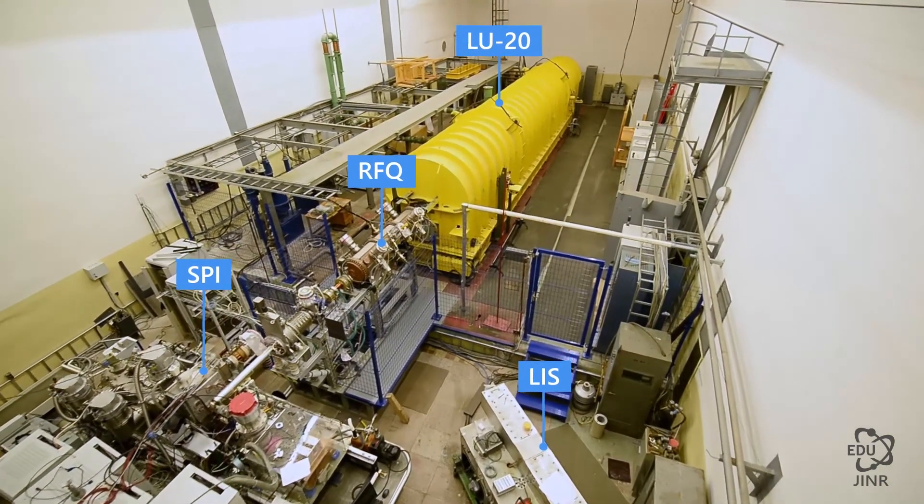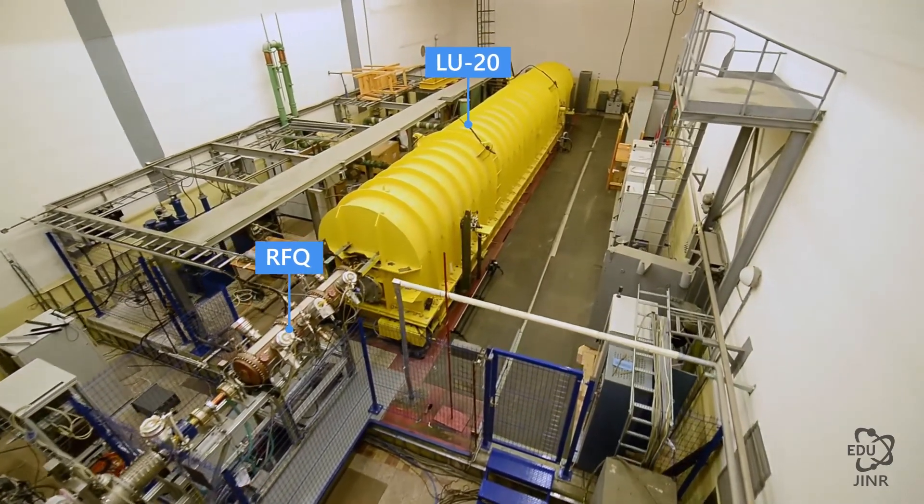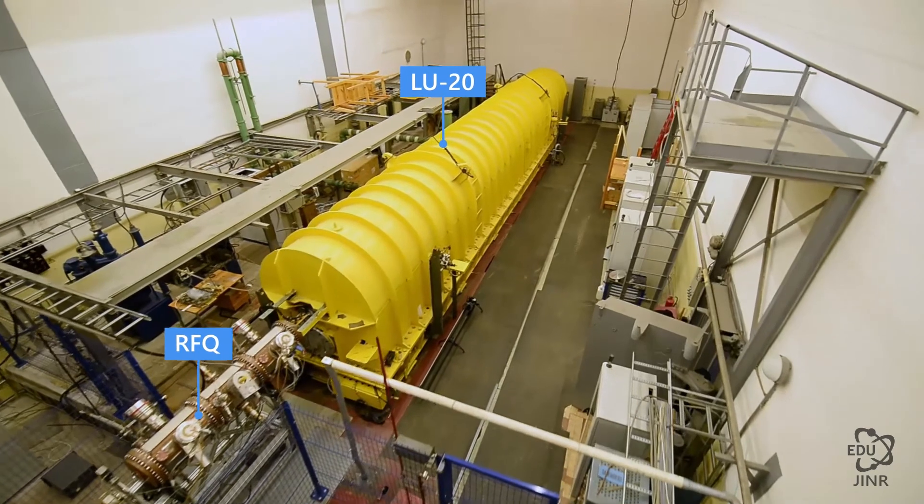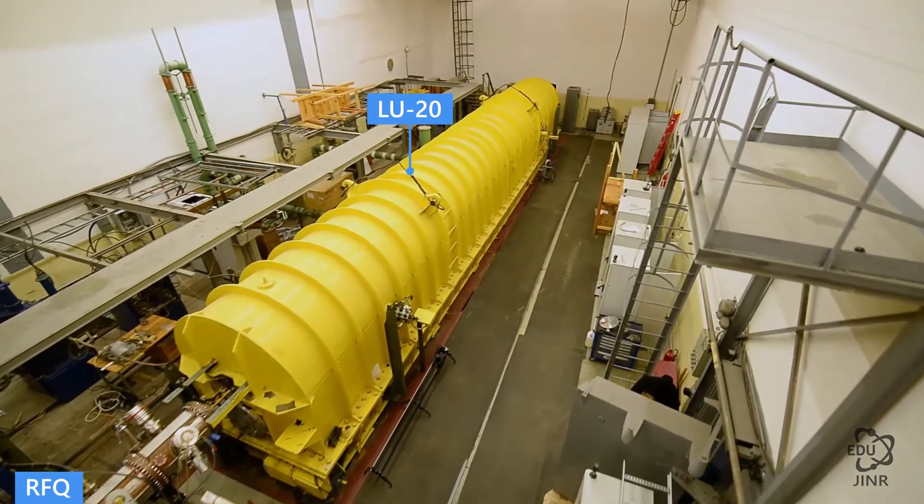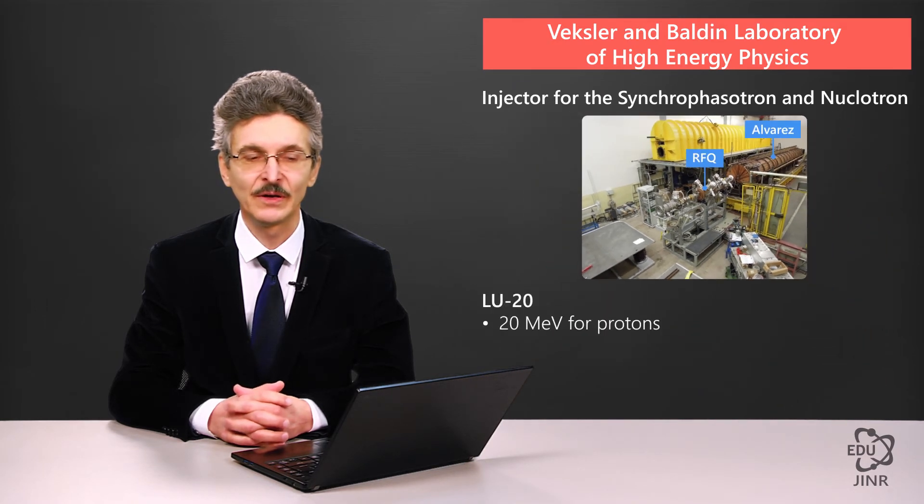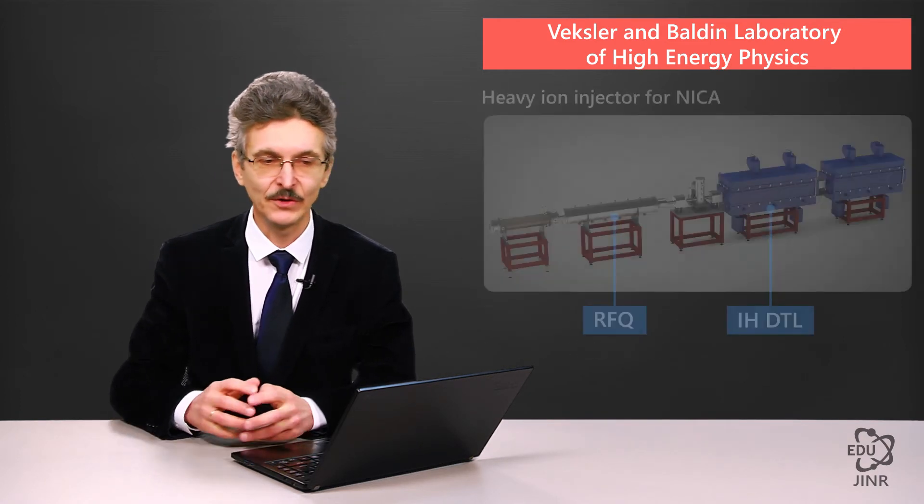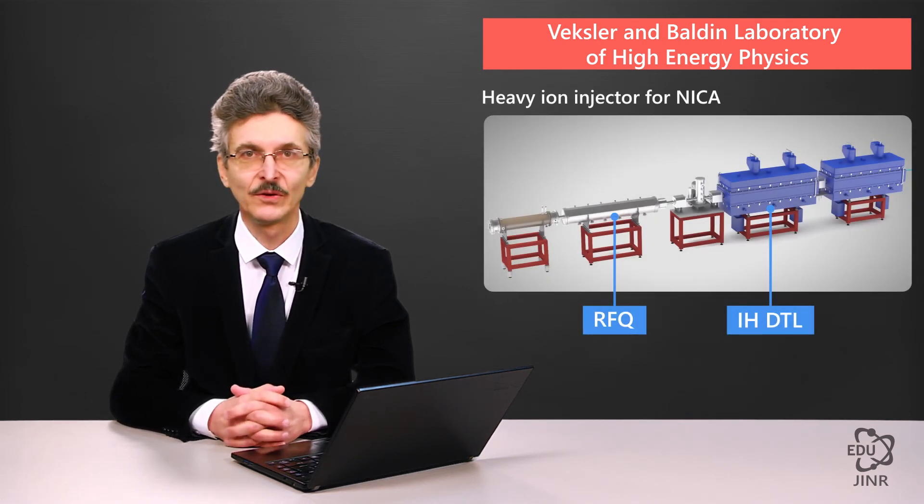Originally, this accelerator had been created for injection into the synchrophasotron. Then it was used for injection into the nucleotron. In the future, it will be used for injection into the nucleotron as part of the Nikka project. This accelerator is called LU20. It accelerates protons up to 20 MEV and light ions up to 5 MEV per nucleon.